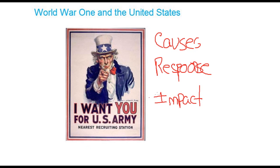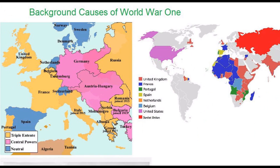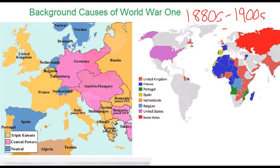Before we get started discussing how the U.S. responds to the war, it's important to understand the background causes of the conflict. The war is brought about through a number of different factors, so there's really no one single cause. We'll begin by looking at some of the broader background causes, beginning in the 1880s — in some ways even before the 1880s — and continuing into the first decade of the 1900s.